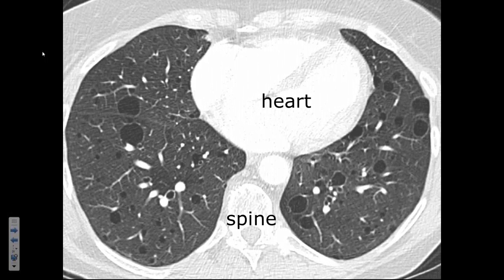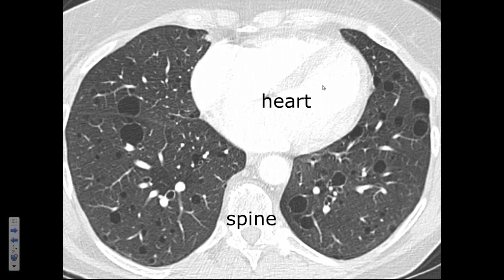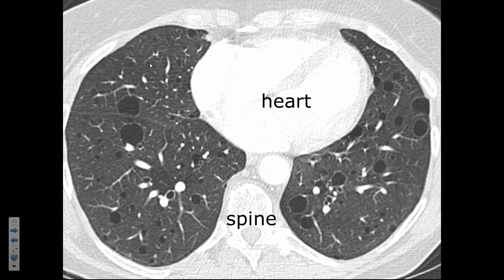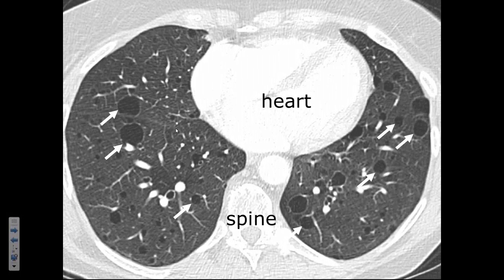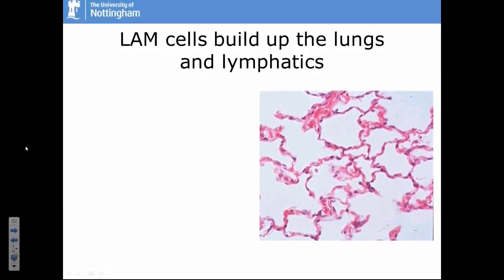Most women get diagnosed with LAM after having a CT scan. On the CT scan, the person is lying on the scanner table. The big grey areas are the lungs — grey colour is normal lung tissue, little white things are blood vessels. The round black areas highlighted by the arrows are lung cysts where the normal lung tissue has been damaged and an air space has formed. This is characteristically what LAM looks like on a CT scan, though once someone sees a scan like that, it might also be various other diseases.